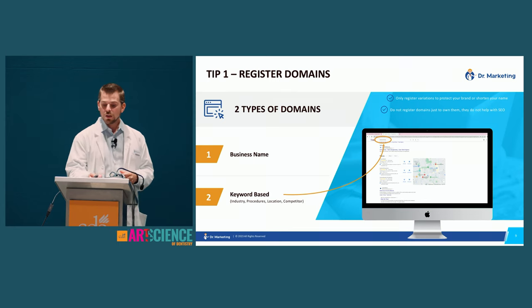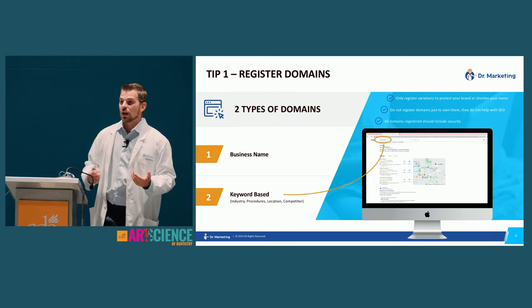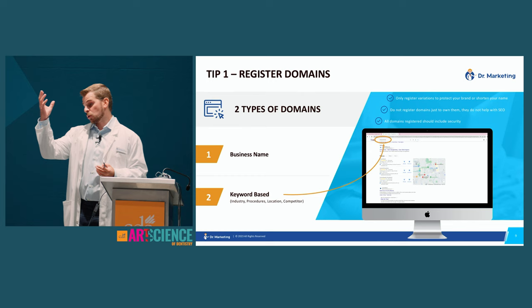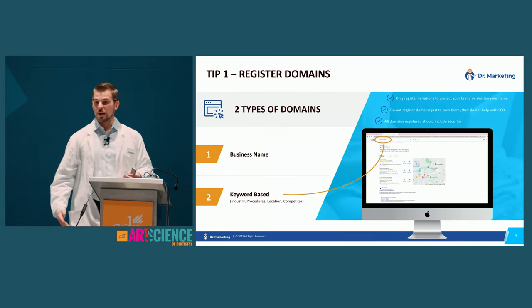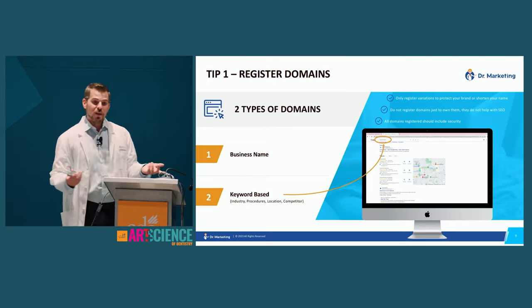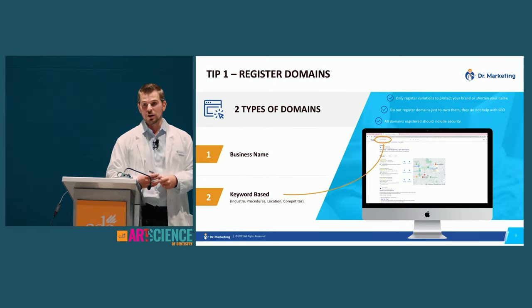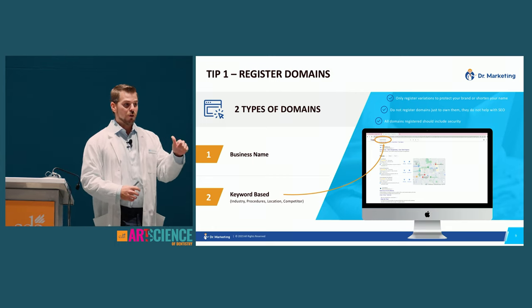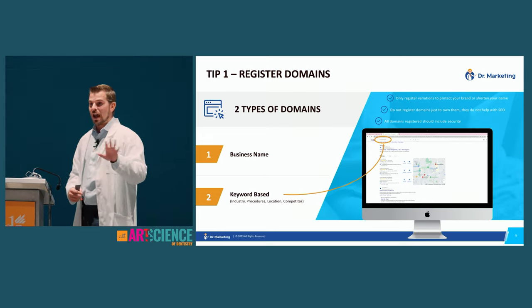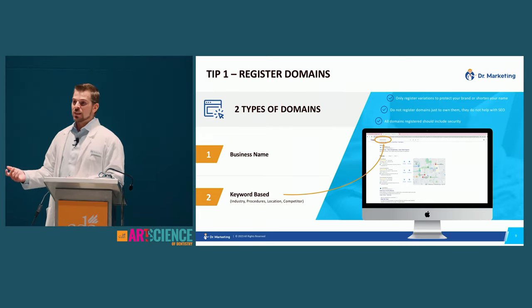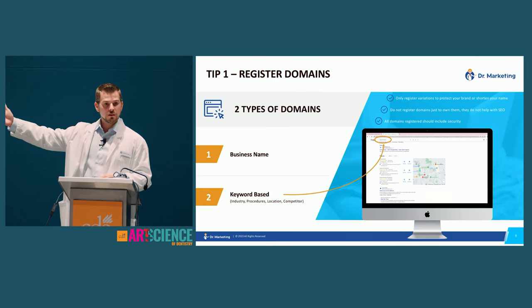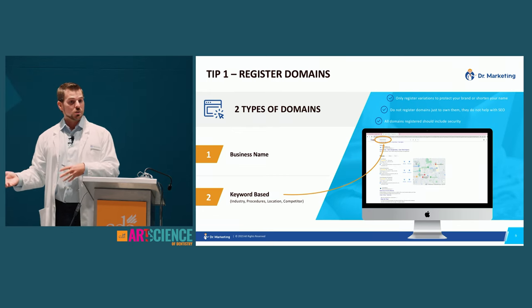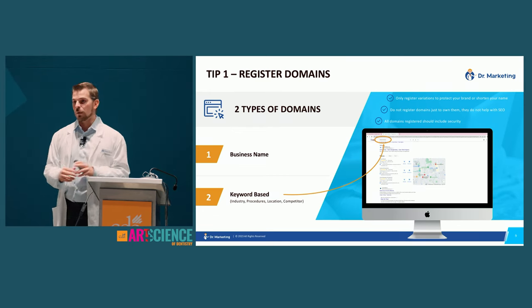The only reason to register multiple suffixes for your business name is to protect your identity. When you register a domain, your information becomes public, so spammers can scrape your contact info. Prevent this by adding a security blanket to the domain, which redacts your phone, fax, email, address, and business name. Domains typically cost $15–$30 per year; security blankets are $5–$20, so you can get a domain with security for around $40–$60 per year.